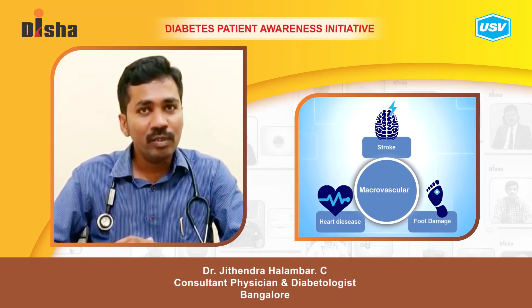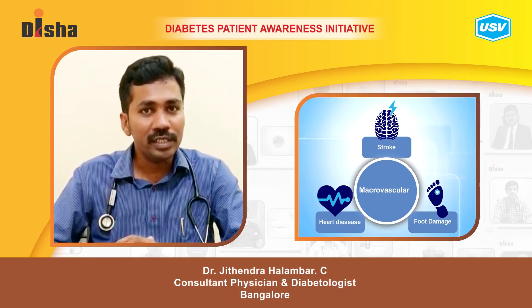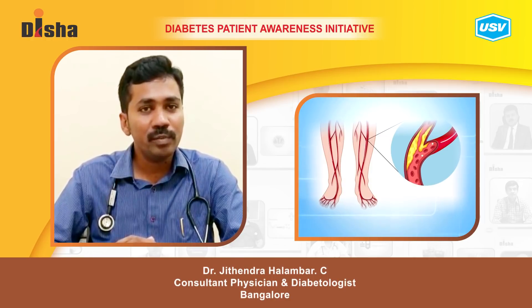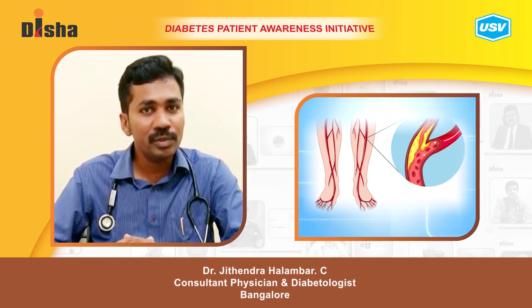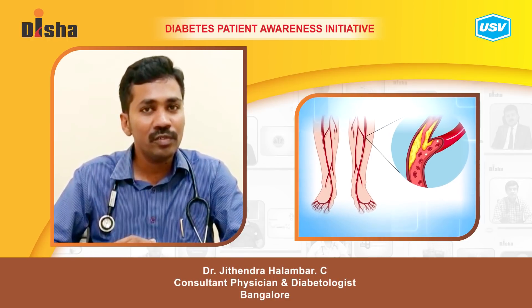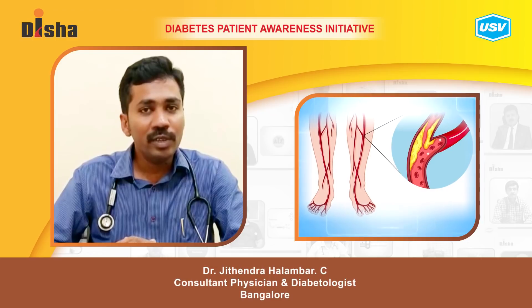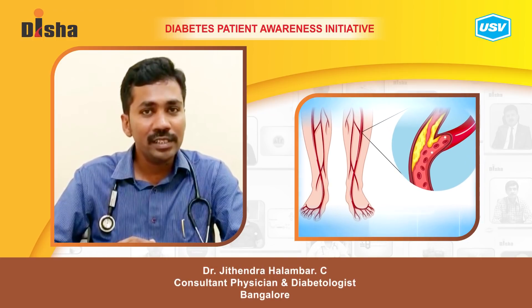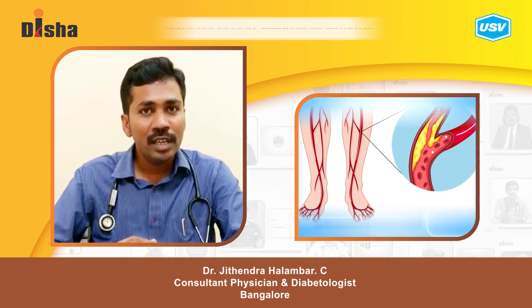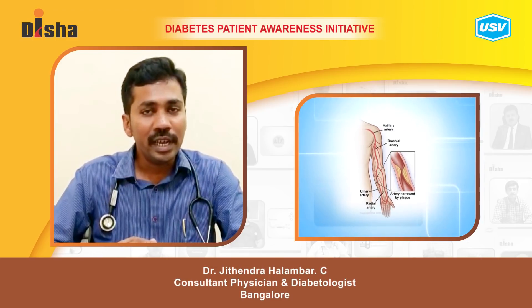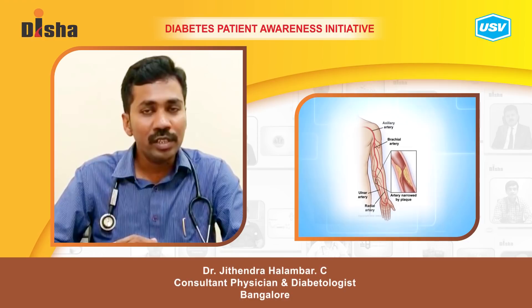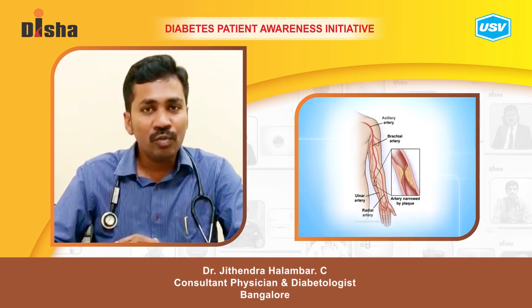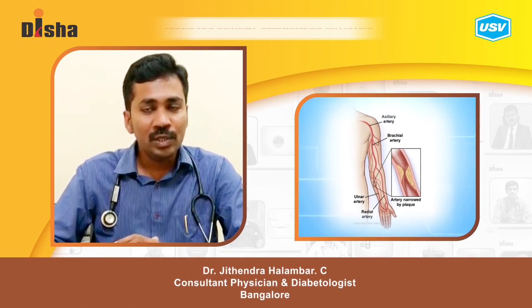How does a patient present with peripheral vascular disease? Peripheral vascular disease means there is occlusion of blood vessels in the peripheries — like in the legs, upper limbs, hands, arms, or forearms.